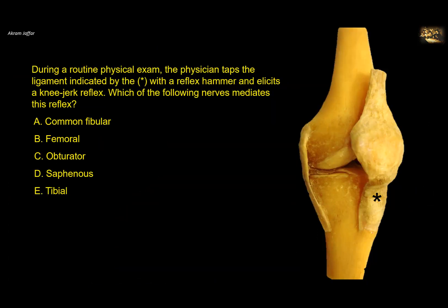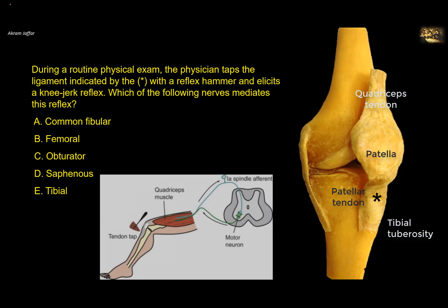During a routine physical examination, the physician taps the ligament indicated by the asterisk with a reflex hammer and elicits a knee jerk reflex — which of the following nerves mediates the reflex? This is the patellar tendon or ligamentum patellae. The quadriceps tendon is attached to the patella, which is a sesamoid bone, and from the patella starts the patellar tendon, which is attached to the tuberosity of the tibia. Tapping the tendon causes contraction of the quadriceps femoris muscle, which is supplied by the femoral nerve. In fact, the femoral nerve is tested, or specifically the spinal root segments L2, 3, and 4.